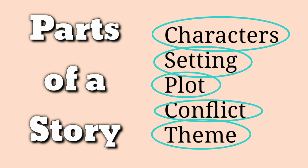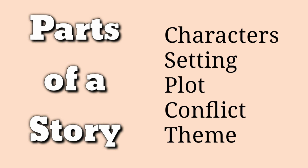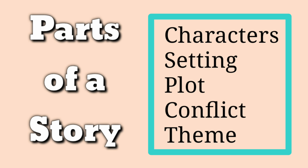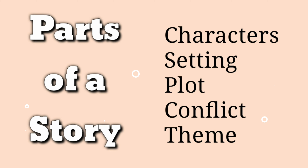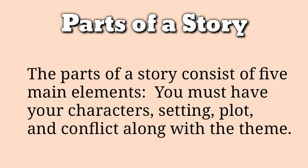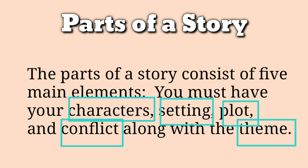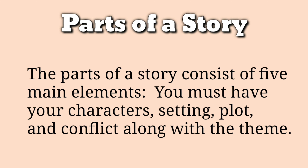What are the parts of a story? In writing a story, you have to consider the following: the characters, the setting, the plot, the conflict, and the theme. But first, you need to provide your title. You must know how your story works — imagine the things you want to happen. What genre are you going to use? Either love stories, horror stories, action stories, and so on. The parts of a story consist of five main elements, so that you can easily understand the flow in writing a simple story.